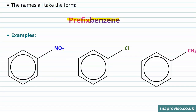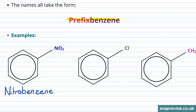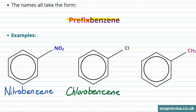So we can see that in practice here with these examples: here we have a nitro functional group, so we have nitrobenzene. Here we have a chlorine atom, so we have chlorobenzene. And finally, we have an alkyl branch, so here we have methylbenzene.